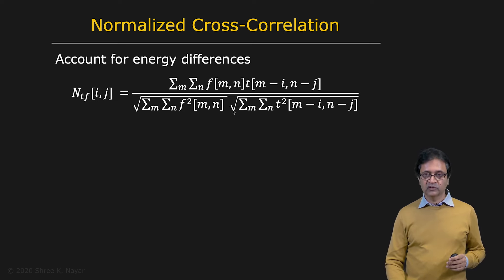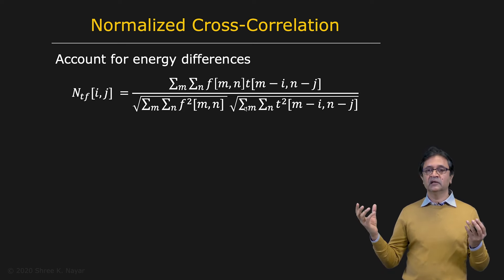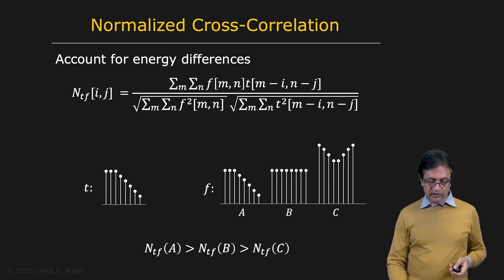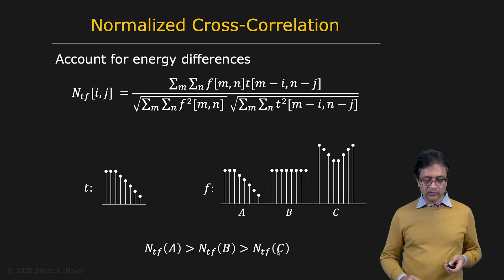So now, coming back to our example that we were looking at, here's your template. And here is the signal, the image that we were looking at. And you find now that the normalized cross correlation for A is greater than for B, which is greater than that of C, which is exactly what we want.